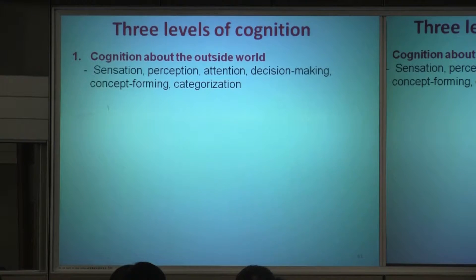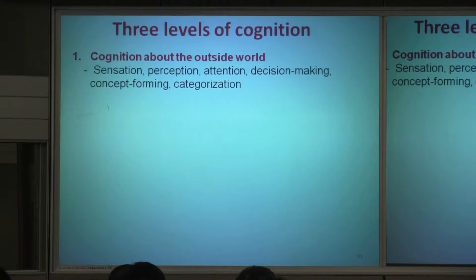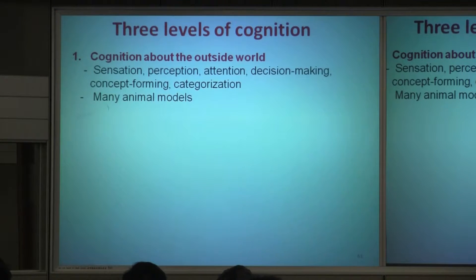Decision-making. Concepts about the outside world — for example, this desk is in the same category. A concept of desk, and a categorization of different types of animals. Dogs are dogs, even though they're different species. These are concepts of categorization, cognition about the outside world. Many animals have this. So when we talk about animal models, you can study this in animals.